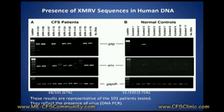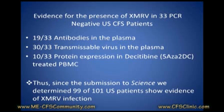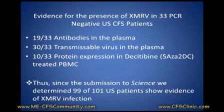They looked at 101 patients and examined the DNA sequences of the virus. It's a really sophisticated way to look. What they found was 67% positive among CFS patients and 3.75% of the 320 controls. Of the 33 negatives, they went on and looked in other ways — 19 of those had antibody in their plasma, and 30 of the negatives had virus they could identify by taking serum from the plasma, infecting a cell line, and growing the virus. So they could transfer virus from the plasma to the cell line.